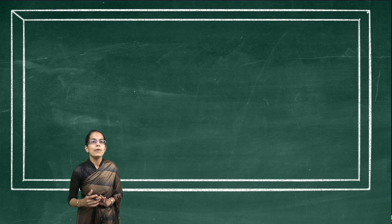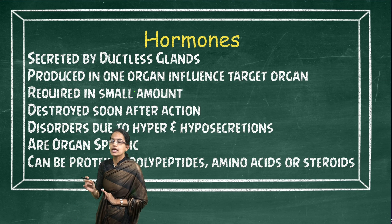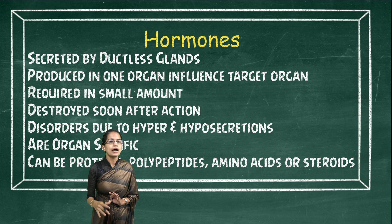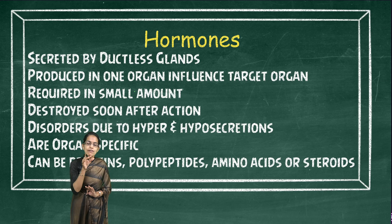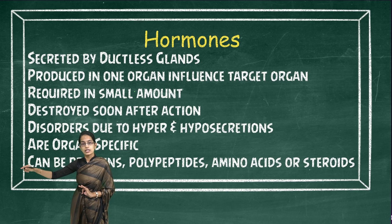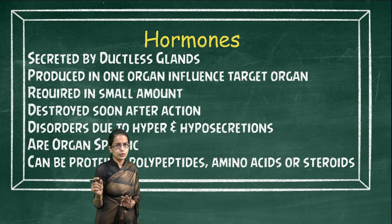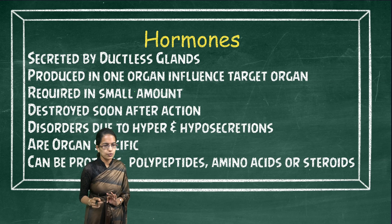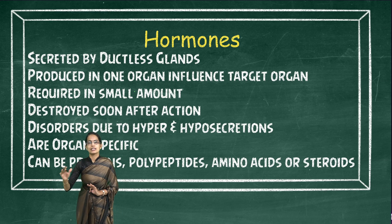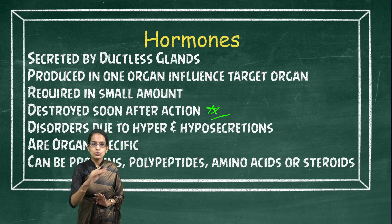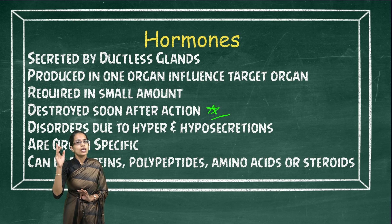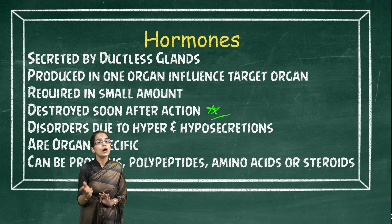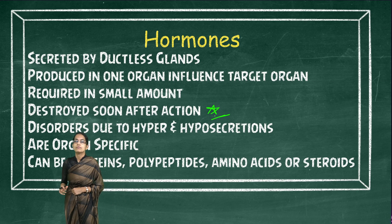These secretions come out as hormones, which are chemical messengers, secreted directly into the blood by ductless glands. They run in the bloodstream but affect only the target organ. They are required in very small amounts, since even a small quantity is sufficient to act directly in the bloodstream. Soon after their action is completed, they are destroyed — which is a very important point. If the amount of secretion is a little less, there can be diseases due to hyposecretion; if a little more, diseases due to hypersecretion.